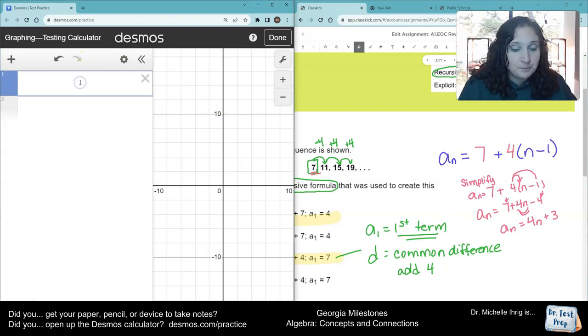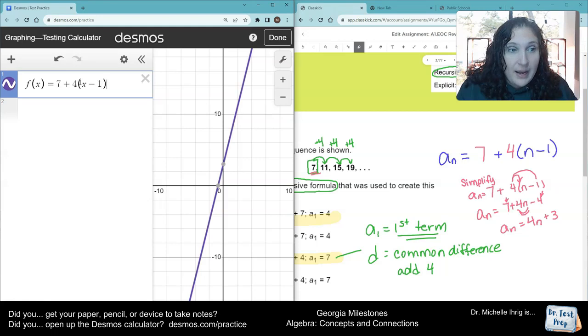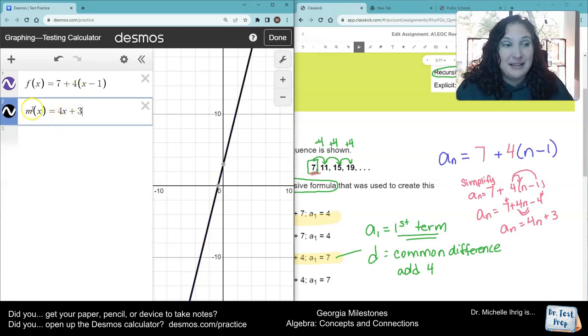You could double check it by just typing it in the graphing calculator. So I'm going to type here, F of X equals 7 plus 4 times. Remember, don't write N, write X. And then I'll just say M of X for Michelle, my first name. It doesn't matter. The one that I think it is. And see how it's the same line? That means I simplified it correctly.